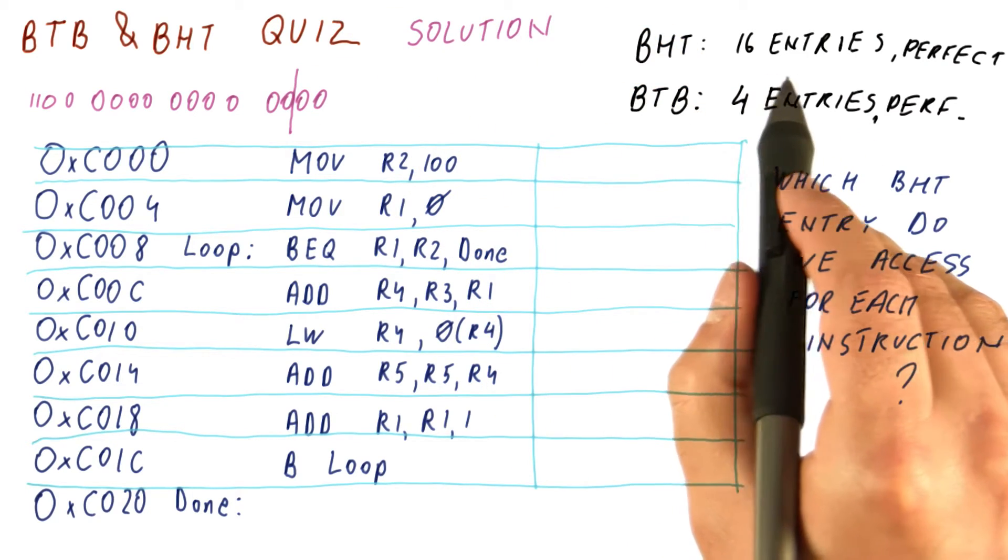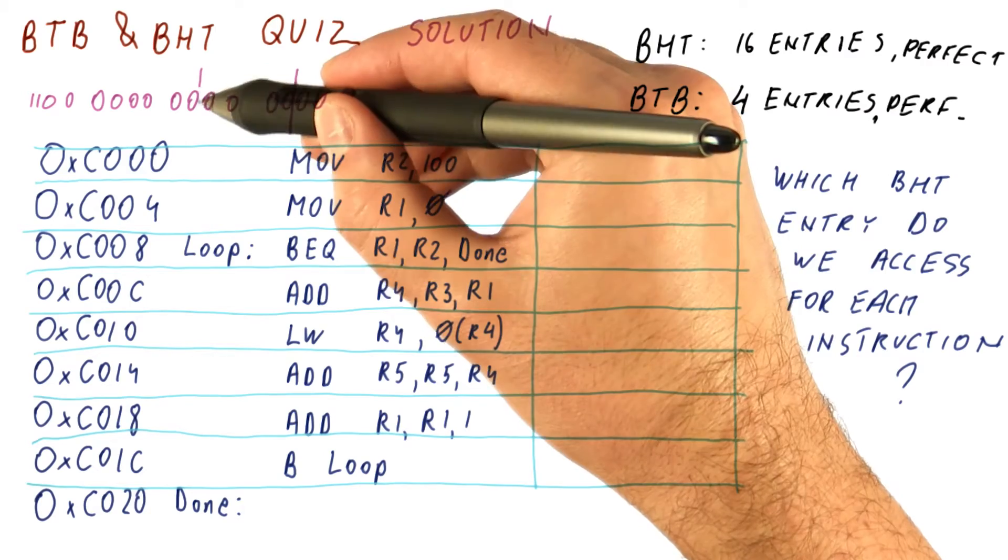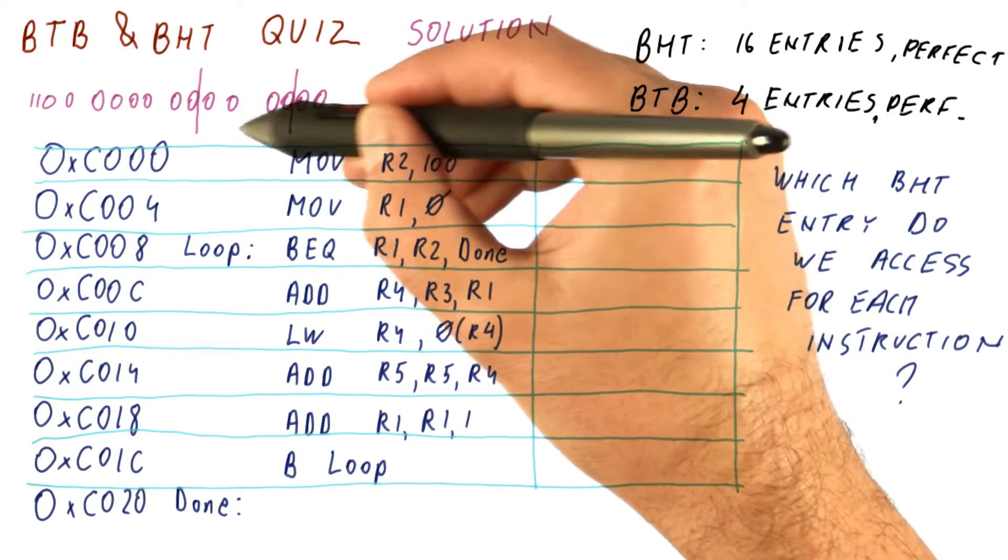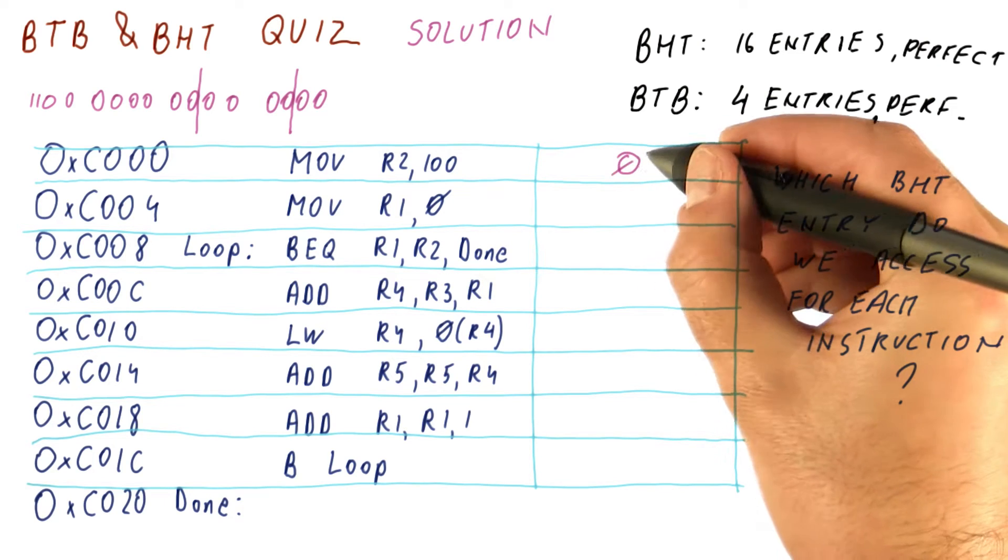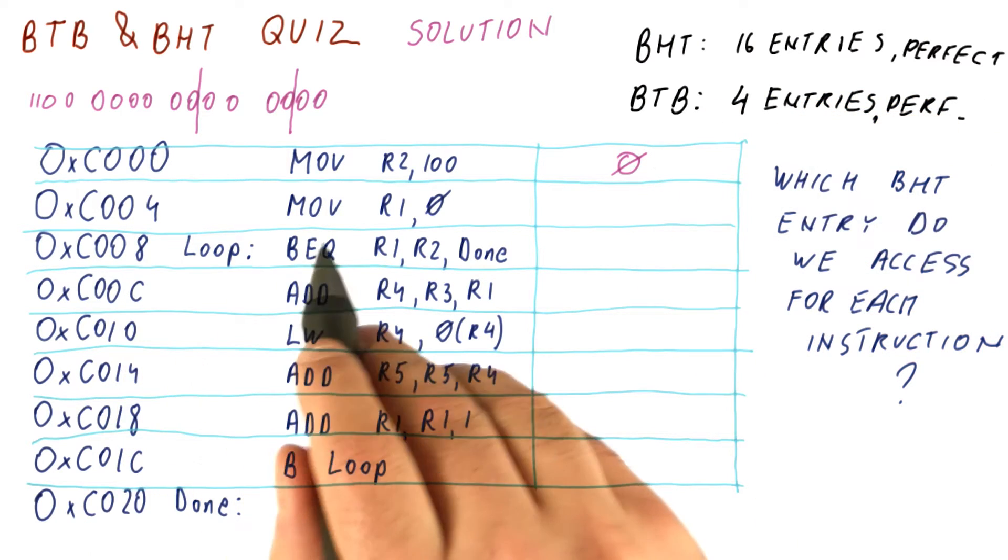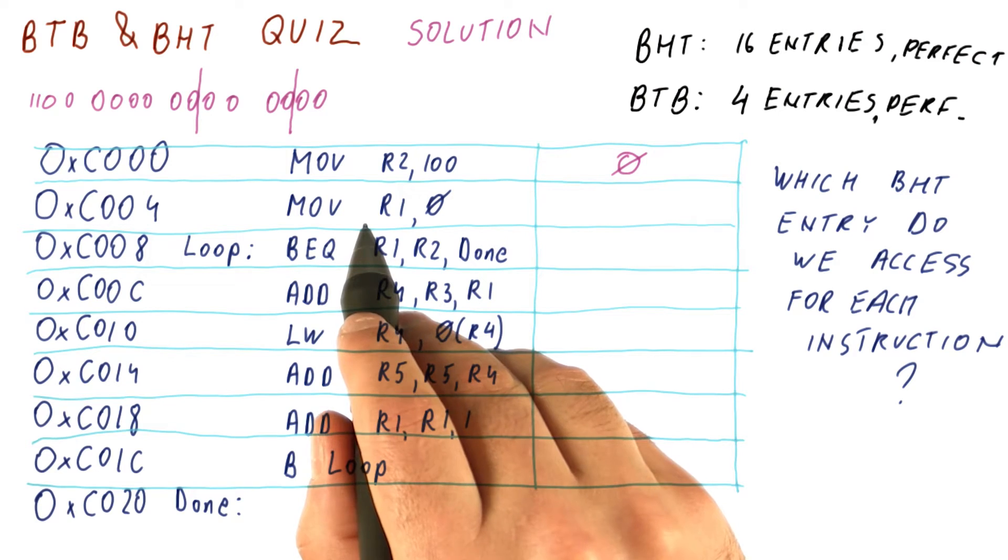And now because we have 16 BHT entries, we take the next four bits, and this is the number of the BHT entry. In this case, we're accessing the BHT entry number zero. Now let's look at this other move instruction here.